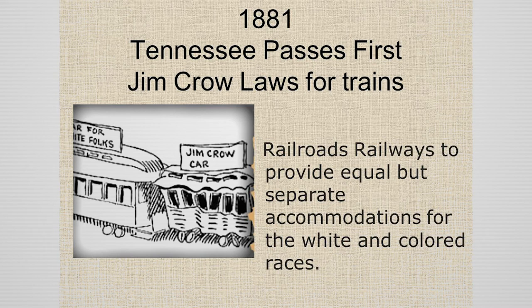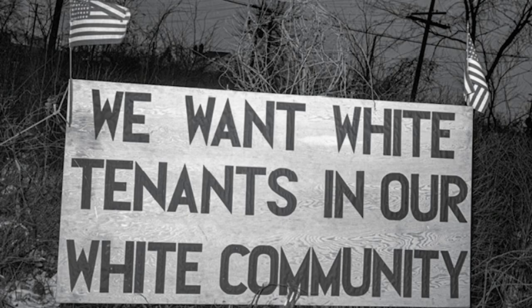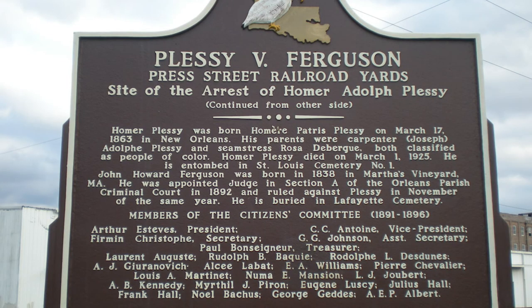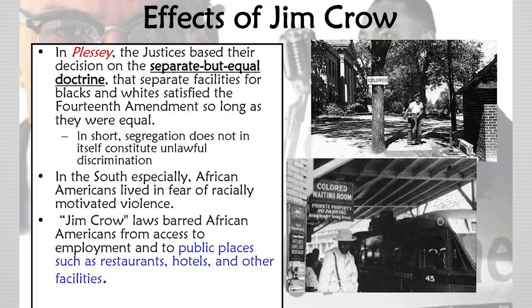In 1881, Tennessee passes the first of the Jim Crow segregation laws, segregating state railroads. Similar laws are passed over the next 15 years throughout the southern states. In 1887, Augustus Saint-Gaudens unveils the Standing Lincoln statue in Lincoln Park, Chicago. In 1896, the Plessy versus Ferguson case rules racial segregation constitutional by the Supreme Court, and the Jim Crow 'separate but equal' law begins barring African-Americans from equal access to public facilities.